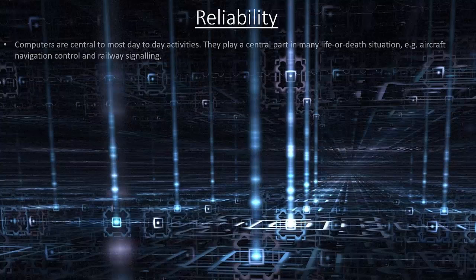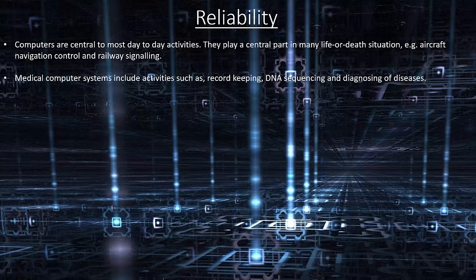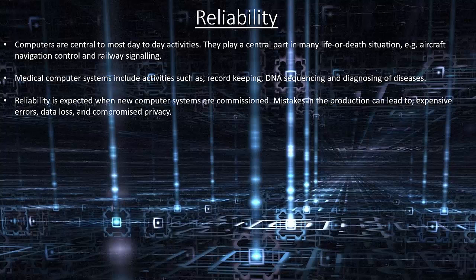Reliability. Computers are central to most day-to-day activities. They play a central part in many life or death situations, for example aircraft navigation control and railway signalling. Medical computer systems include activities such as record keeping, DNA sequencing and diagnosing of diseases. Reliability is expected when new computer systems are commissioned. Mistakes in the production can lead to expensive errors, data loss and compromised privacy.